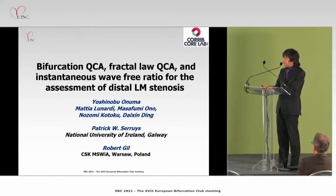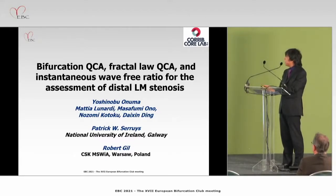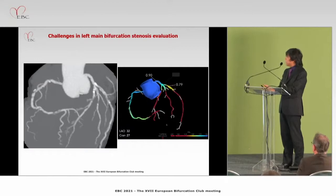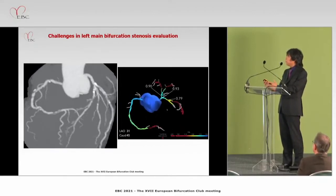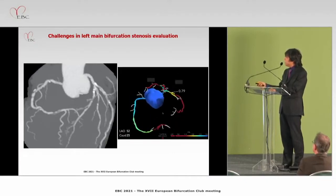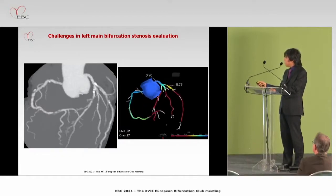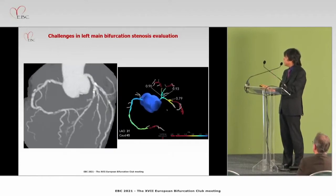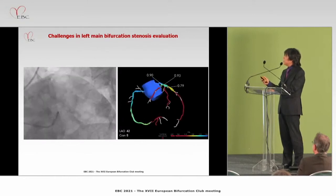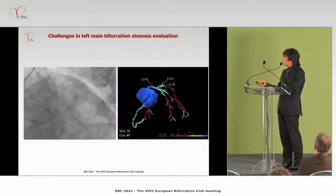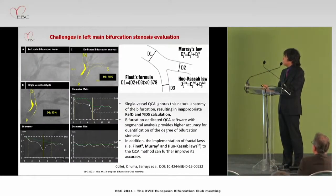This analysis covers bifurcation QCA, fractal law QCA, and instantaneous wave-free ratio for assessment of distal left main stenosis. I present on behalf of Professor Serruys, Professor Gill, and the investigators of the Polvos study. This slide shows we are dealing with a complex three-dimensional object when performing angiography of the left main. For example, one view shows the ostium of the left main branch, but to focus on the distal left main you need a different projection to correctly depict the complex anatomy. We are essentially downgrading 3D information into 2D — that is the challenge of angiography.